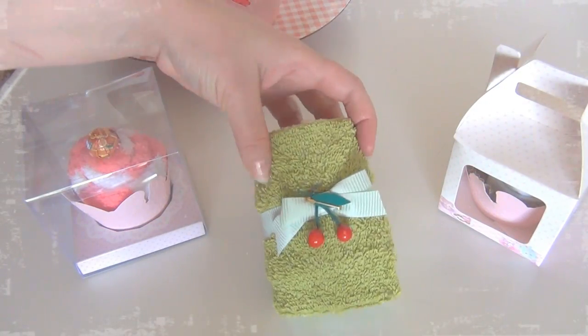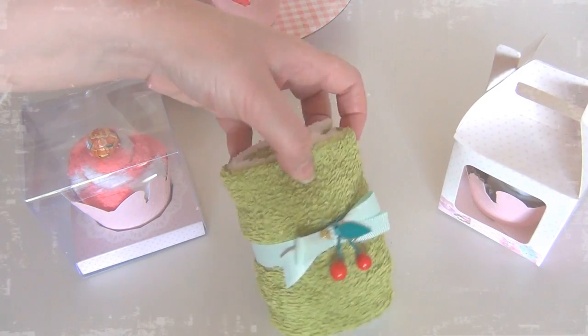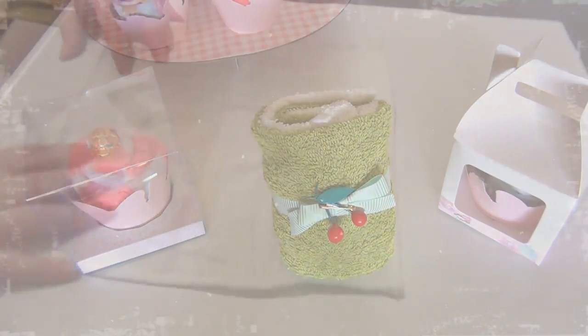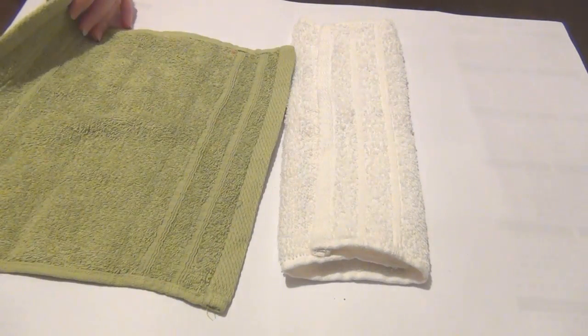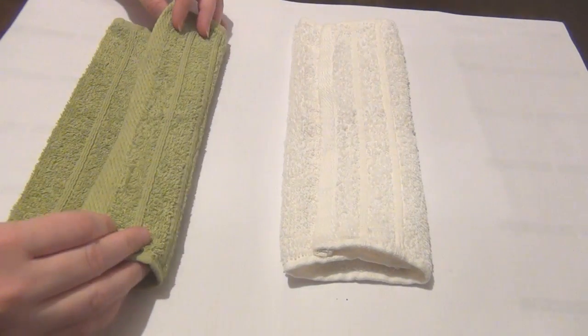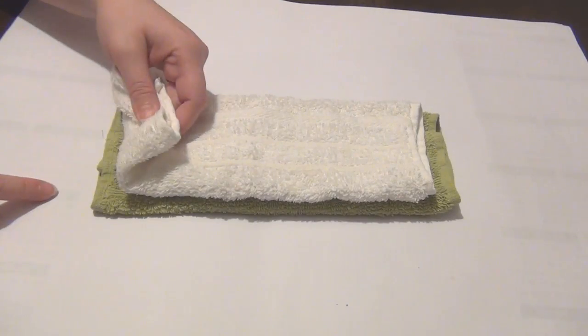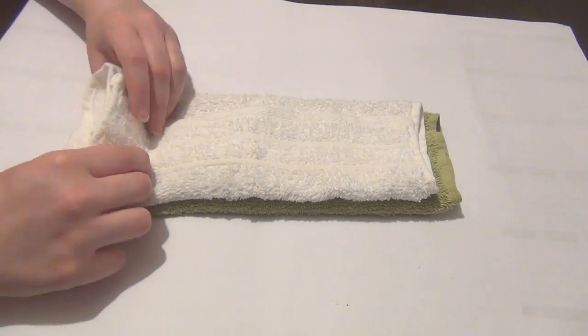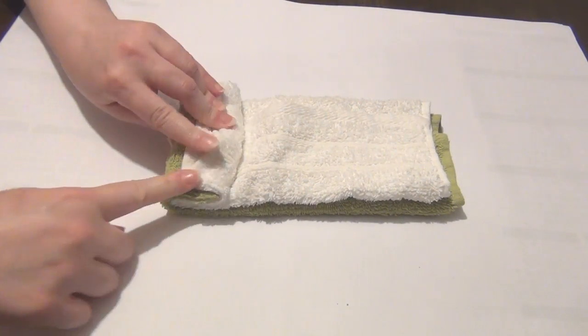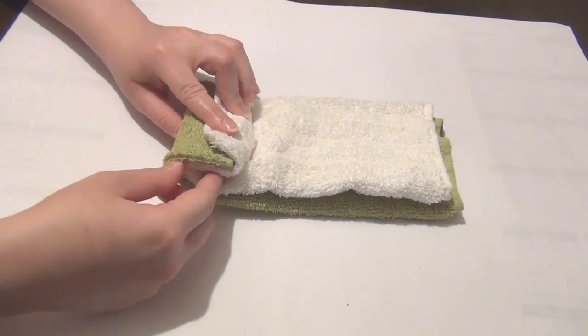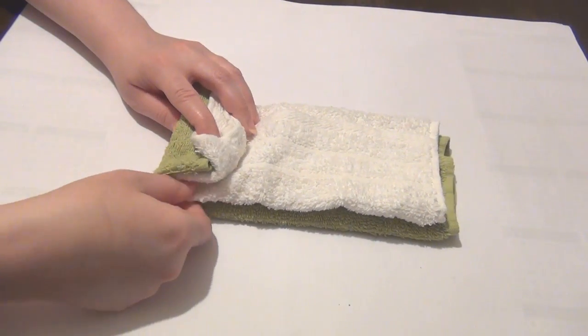So the first cake I'm going to show you how to make is this super adorable rolled cake. What you need to do is take both of your face towels, fold them in two ways as you see me do here in this video. Then place one of the towels on top of the other and just position it so that you have a little bit hanging over the side. Then you're going to start rolling this and just adjust as you go.